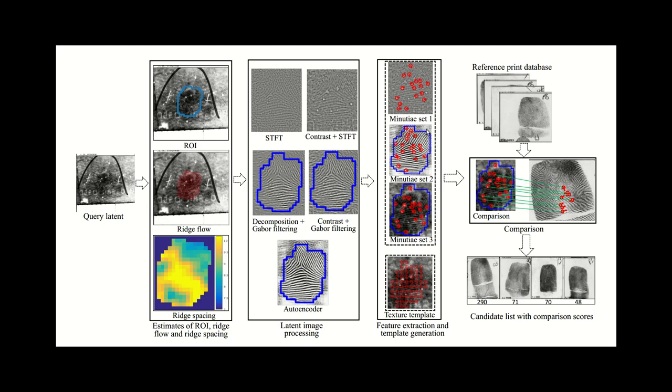Just a quick note as we go into the comparison or matching process: the templates I described refer specifically to the latent prints. For a rolled print, we have only one minutiae template and one texture template since rolled prints are expected to be more straightforward and don't require as much processing ahead of time. During the matching process, each of the three minutiae templates in the latent print are compared in turn with the single minutiae template from the rolled print, and that gives three separate similarity scores.